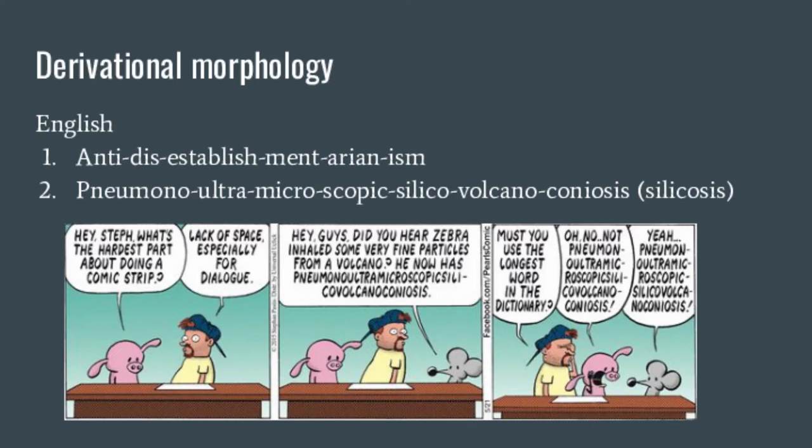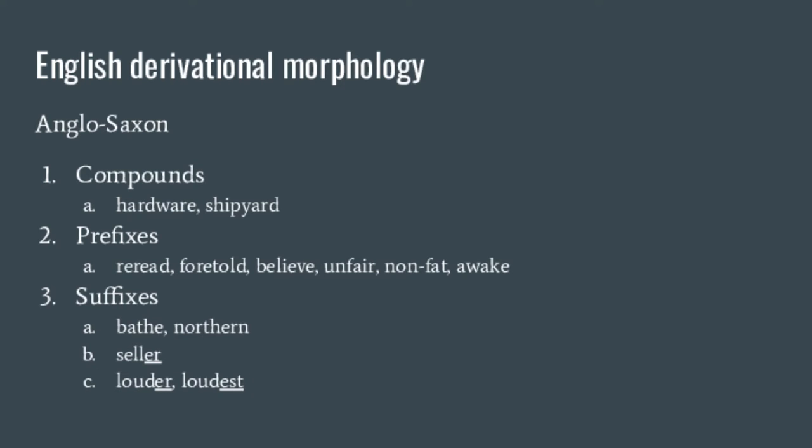We have some Anglo-Saxon compounds — English words can be directly compounded, which is very common in English but not so common in Romance languages like Spanish. English does a lot of direct compounding, kind of like German. We have some Old English and Anglo-Saxon prefixes like 're-' and 'for-,' as well as various suffixes. Let me answer the daily poll question.